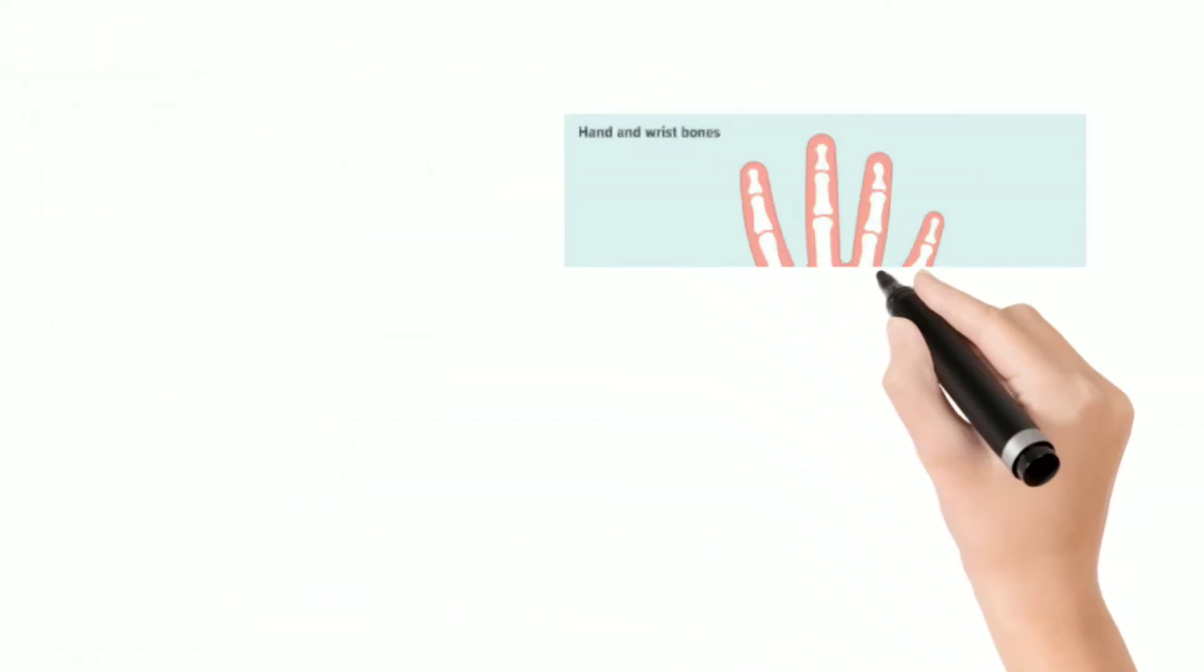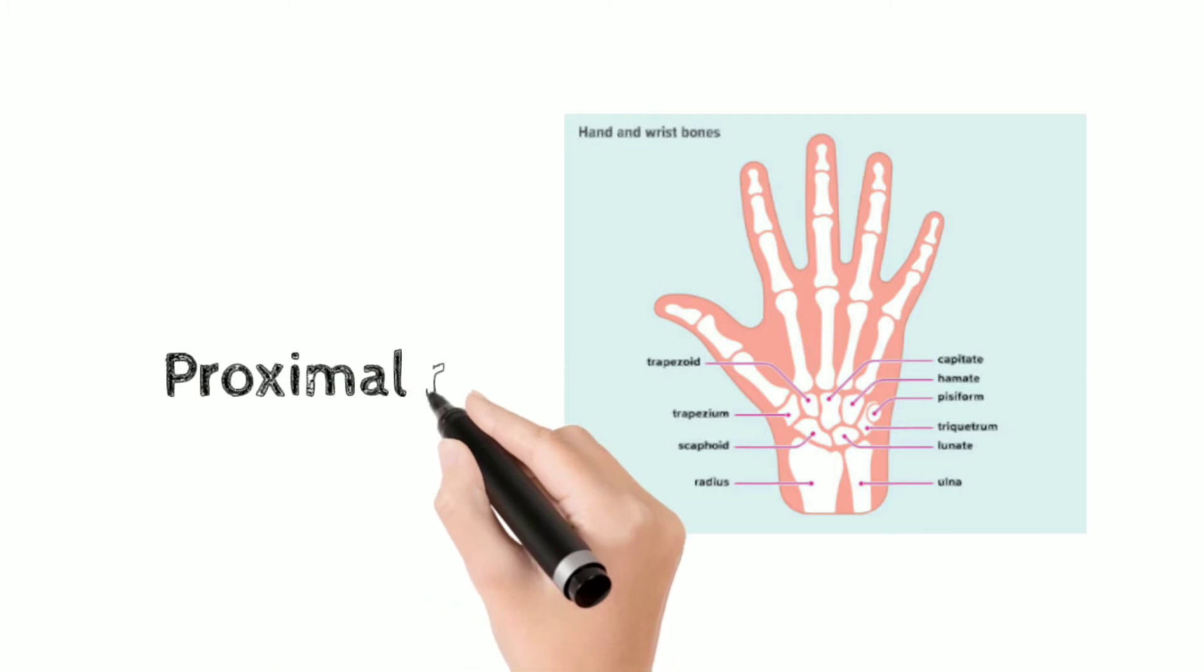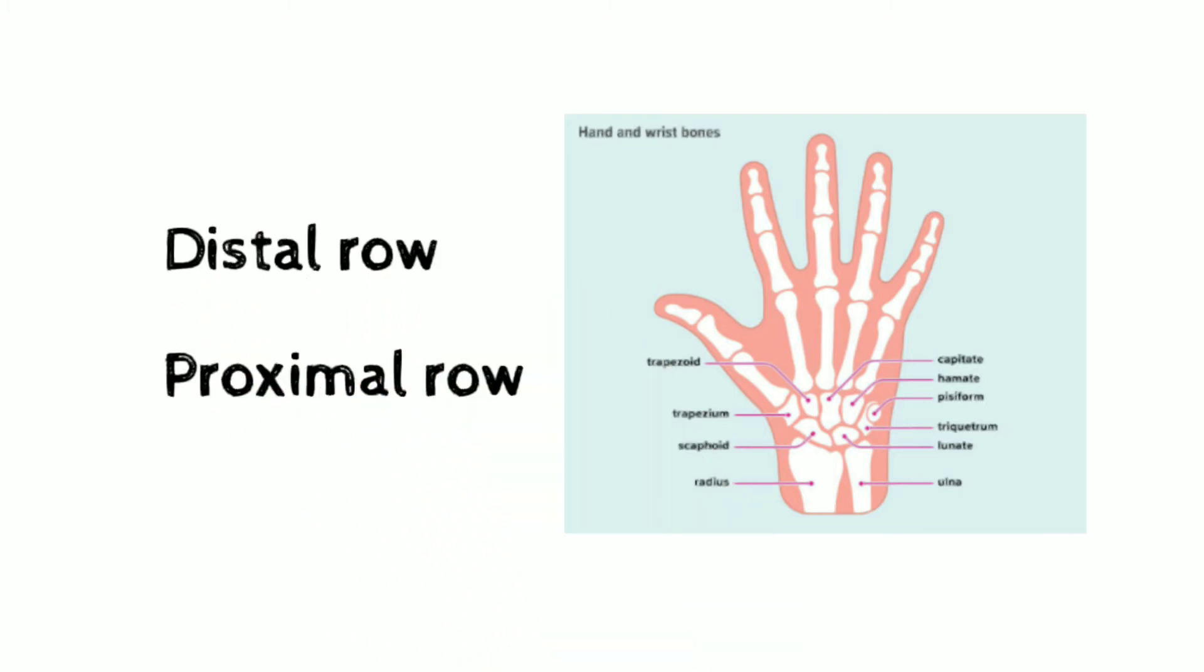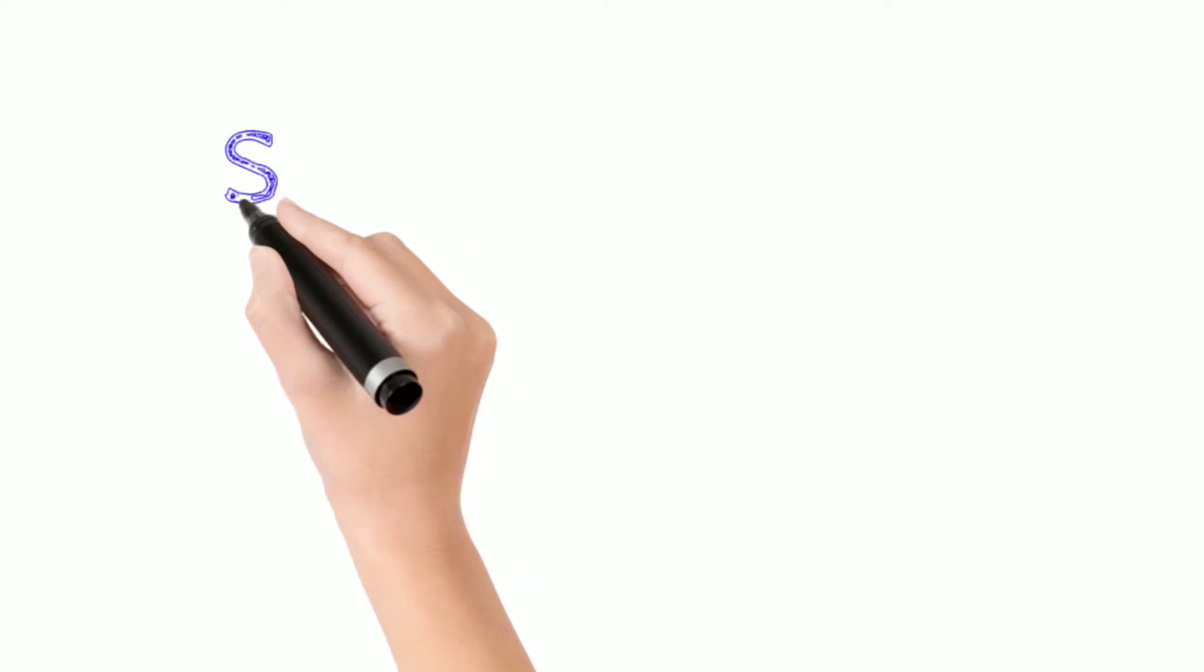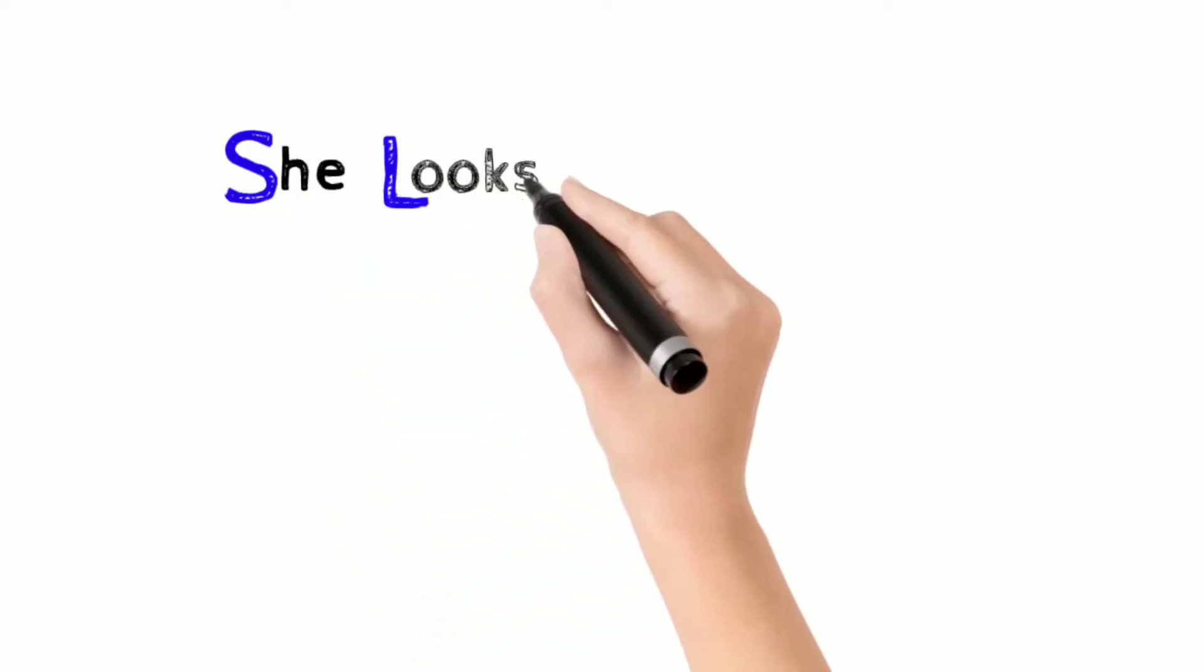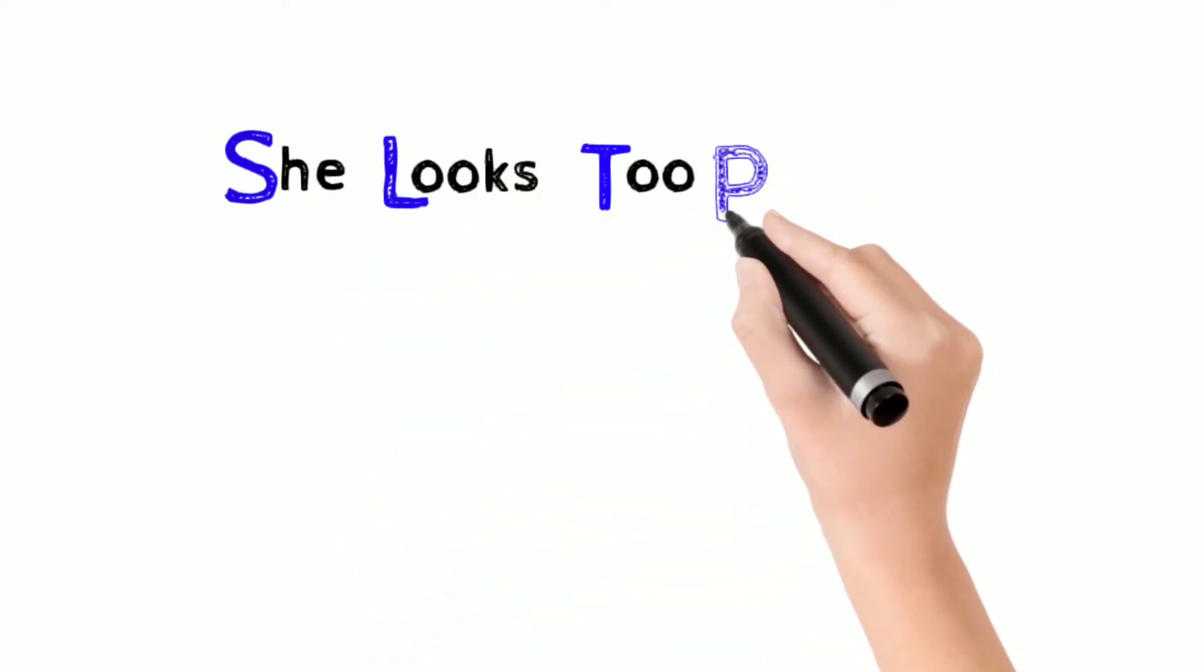Carpal have two rows. The lower row is called proximal row and the upper row is called distal row. To memorize the sequence of carpal bones, we must make a phrase or sentence to keep it remembered.